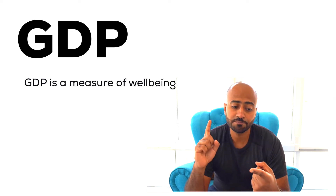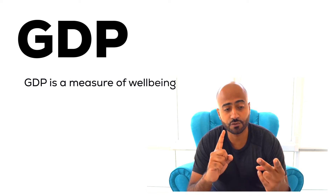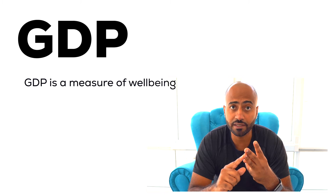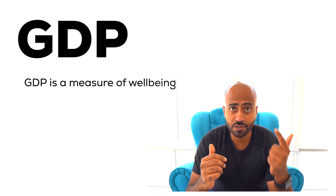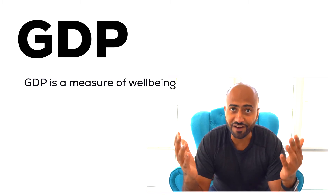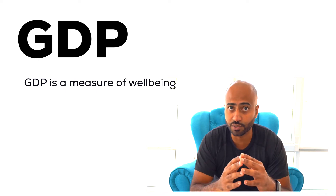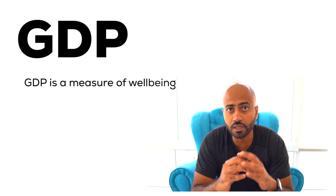GDP is considered a measure of well-being because it measures how much we produce, and therefore how much money we're bringing in and spending. The idea is the more we produce, the more money we make, the happier we are. Obviously there's a lot to take with that assumption, and there are also some underlying problems we need to dig deeper into.